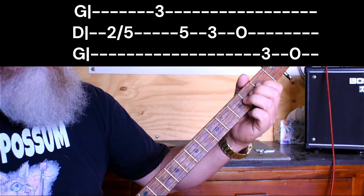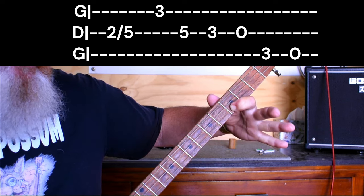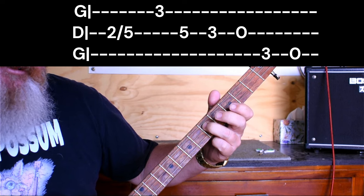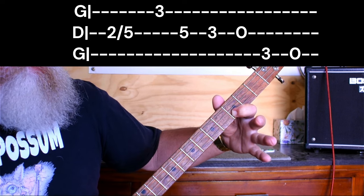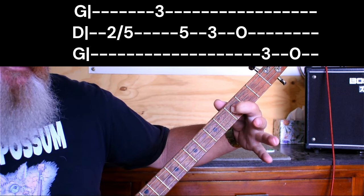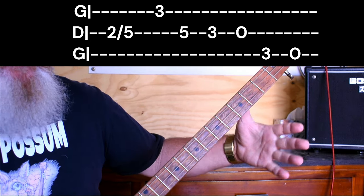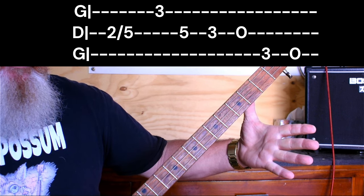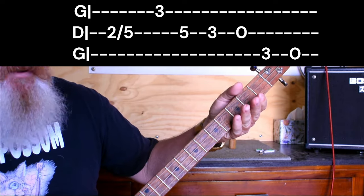So what we do here we slide up to the fifth fret on the middle string, then we hit the third fret on the bottom string and go back to the fifth fret on the middle string. Slide into the fifth on the middle, hit the bottom string on the third, then back to the fifth in the middle and then back to the third on the middle, then open on the middle. And then we hit the top string on the third fret, then open on the top string. Let's just do that again. Then we back to.